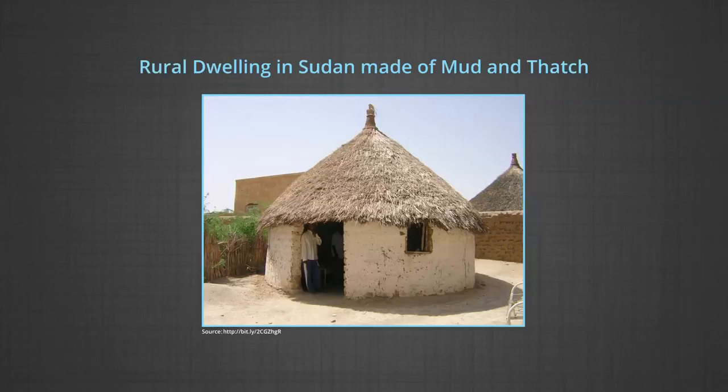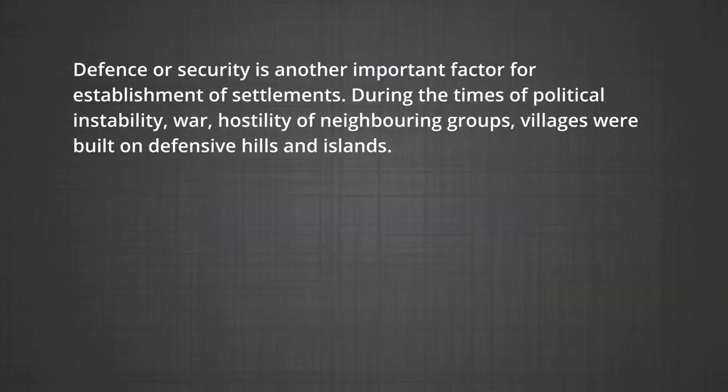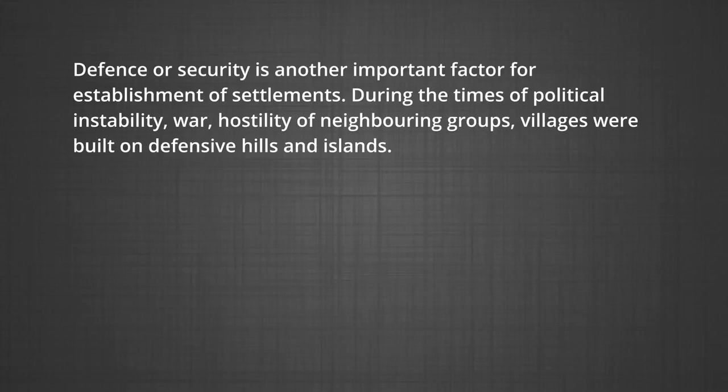You can look at the picture of a rural dwelling in Sudan made of mud and thatch. Defense or security is another important factor for establishment of settlements. During times of political instability, war, and hostility of neighboring groups, villages were built on defensive hills and islands. For example, in Nigeria, upstanding inselbergs formed good defensive sites, and in India, most forts are located on higher ground or hills.